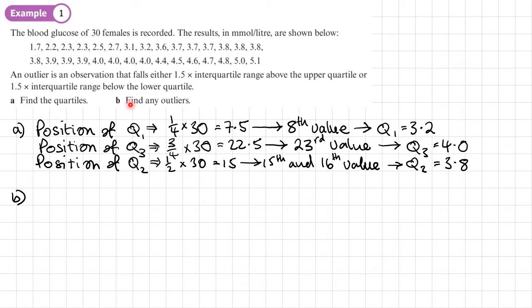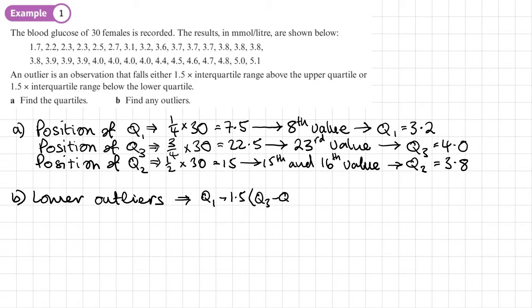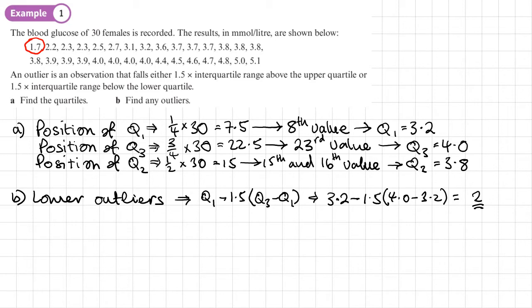Moving on to part B, we want to find any outliers — first checking for lower outliers. We calculate Q1 minus 1.5 times the interquartile range (Q3 minus Q1): that's 3.2 minus 1.5 times (4.0 minus 3.2), which gives a lower limit of 2. Any values lower than 2 are outliers. We can see 1.7 there, so lower outliers: 1.7.